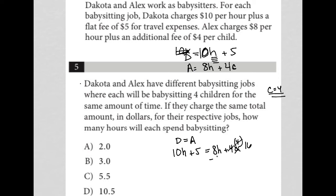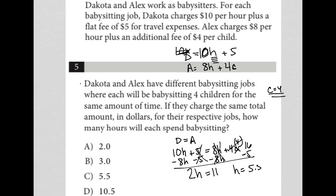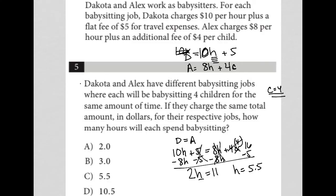To solve this equation, I'm going to subtract 8H from both sides and subtract 5 from both sides. The 5 is gone, 10H minus 8H is 2H, and 16 minus 5 is 11. So we have 2H equals 11, and dividing both sides by 2 gives H equals 5.5.